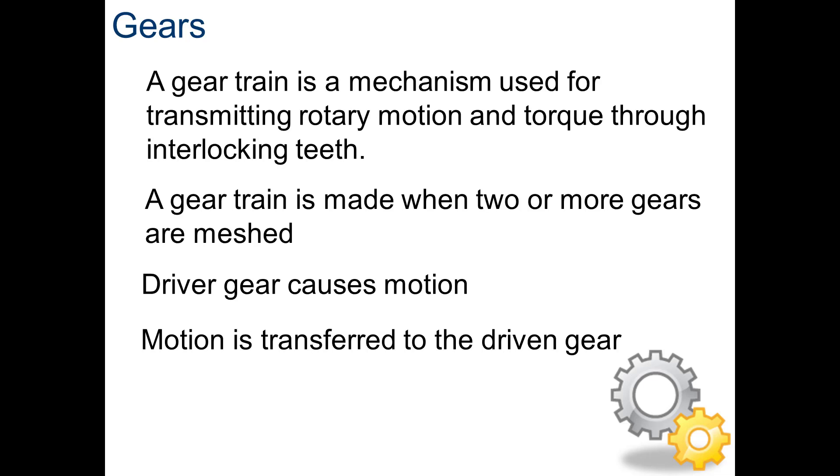Any gear train contains two or more gears that are meshed. You can have as many gears as you want, or as few as two. You have a driver gear, which is the gear that causes the motion, or the input gear. And you have a driven gear, which is driven by the driver. Motion is transferred from the driver gear to the driven gear.